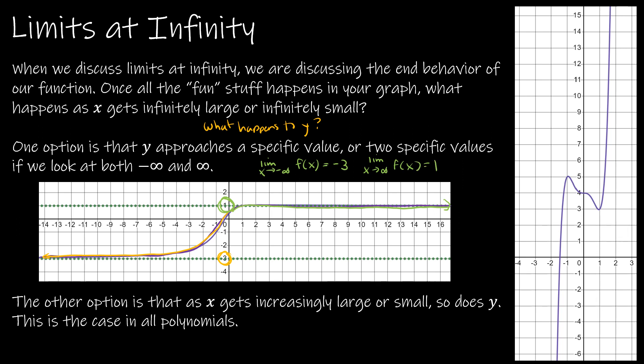The other option is that as x gets increasingly large or small, so does y. Every time you graph a polynomial function, which is y equals x squared, or y equals x cubed, or in this case, this is a quintic function where the highest degree is 5, and then there's some other stuff going on.